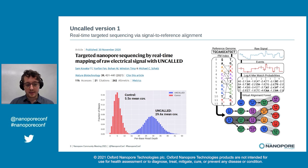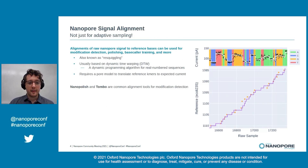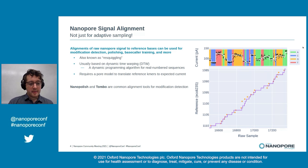We have a lot of plans to further develop Uncalled — to get it working on larger references, with direct RNA-seq data, and to speed the algorithm up. But as we've worked on this, we found it challenging to really assess the accuracy of our alignments. We found that there weren't very well-established tools for analyzing raw nanopore signal alignments, which is surprising because signal alignment has many applications in nanopore sequencing, including modification detection, reference polishing, and base caller training.